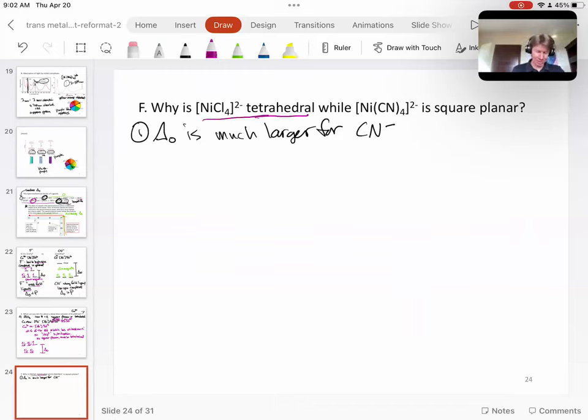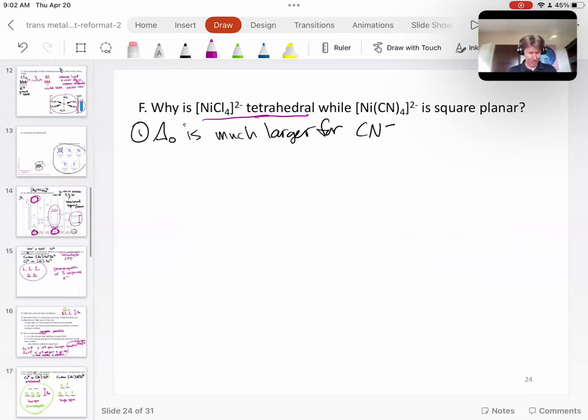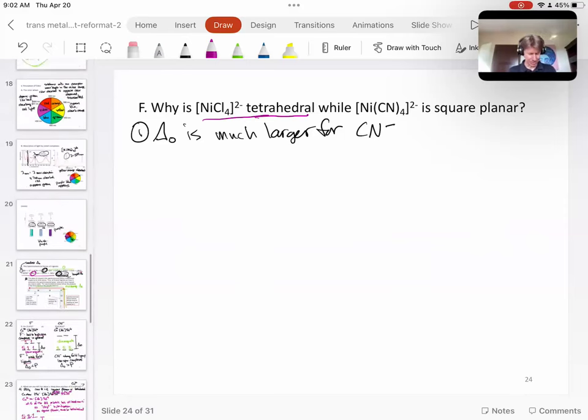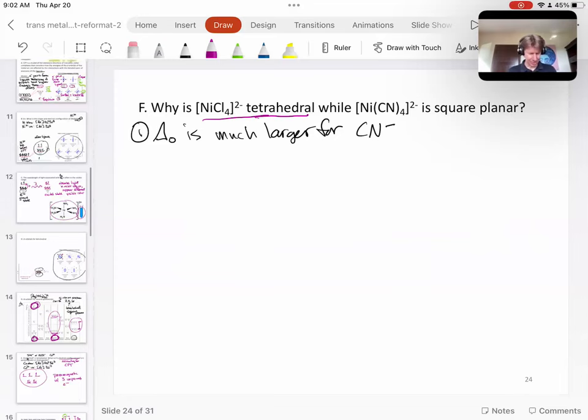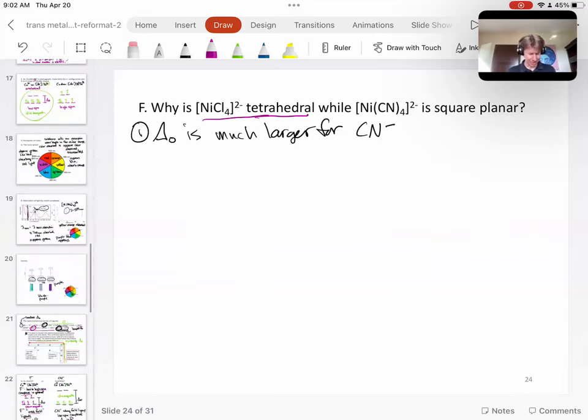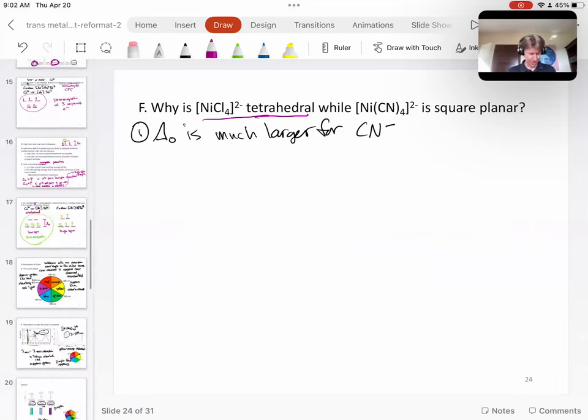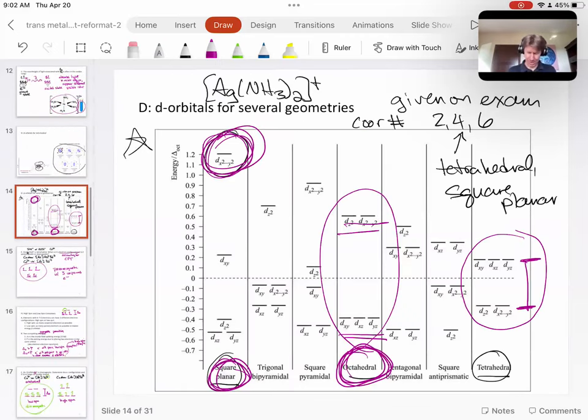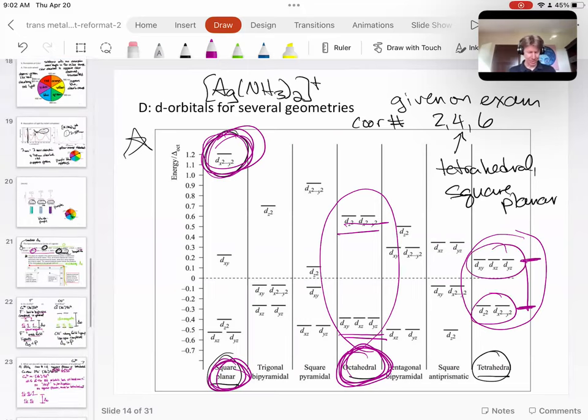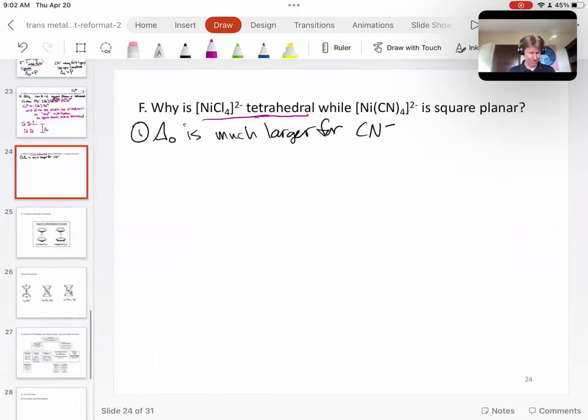So tetrahedral, we're going to go back to our crystal field splitting energy diagram, which is in here somewhere. There it is. And tetrahedral has two down and three up. It's right here. So let's do that. So tetrahedral, so this is going to be nickel chloride.